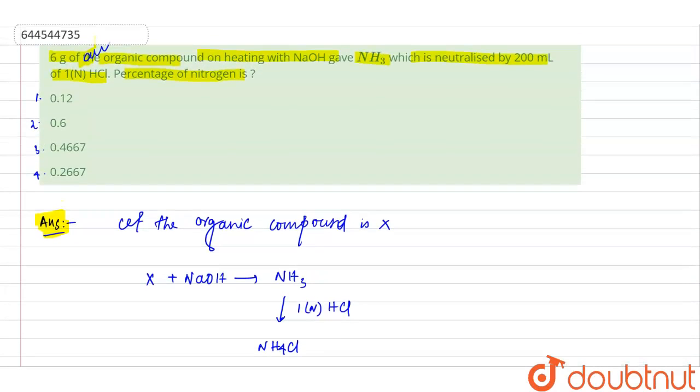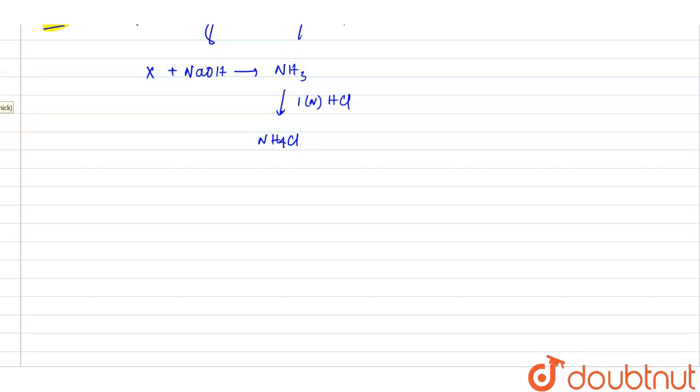Now, we need some more concept. The HCl required is 200 ml and one normal HCl. So what is normality? Normality is the number of gram or mole equivalent of solute present in one liter of solution.